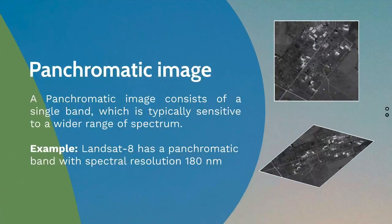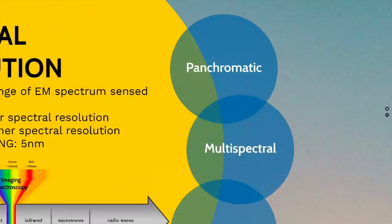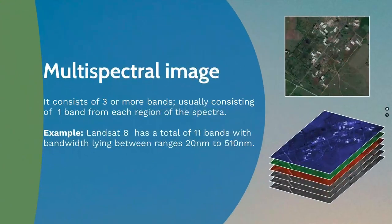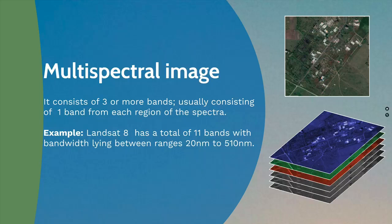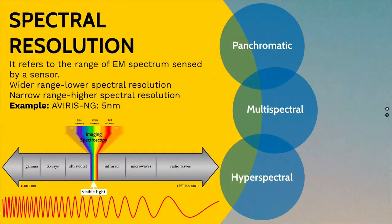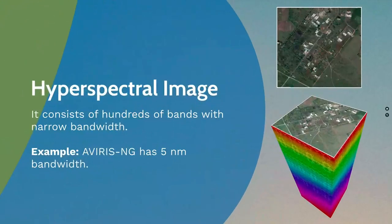Panchromatic images consist of a single band. In multispectral, multi meaning having many bands, which is usually more than three. And finally, in hyperspectral, hyper means up to hundreds of bands clicked at very high spectral resolution.